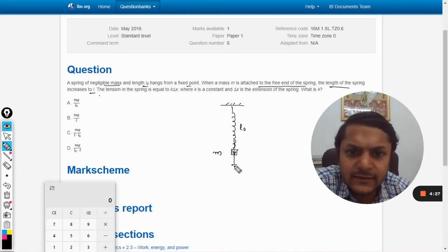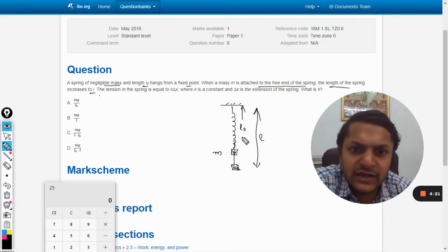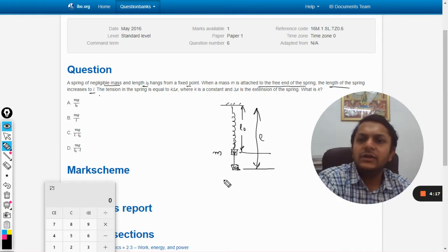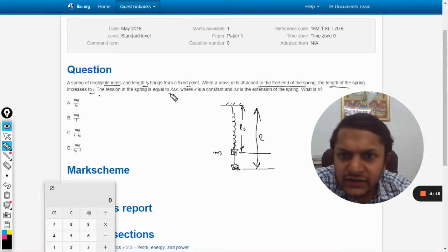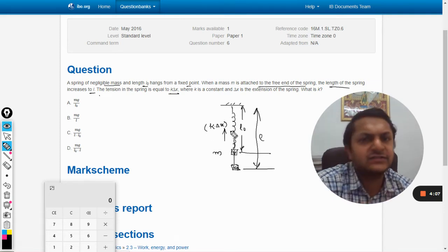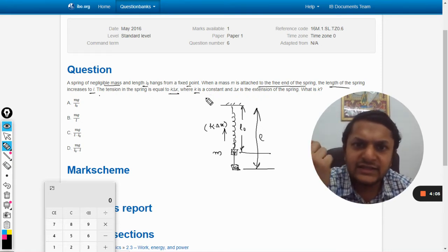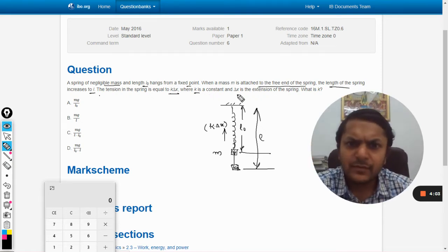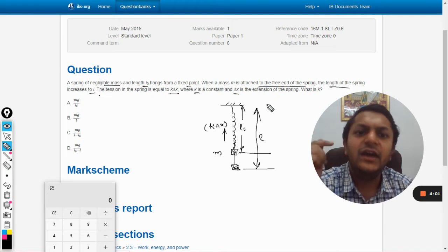The earlier length was L0, okay, this is the extension. The tension in the spring is equal to k delta x, so that is the restoring force given by the spring, k delta x as usual, where k is the spring constant and delta x is the extension in the spring.